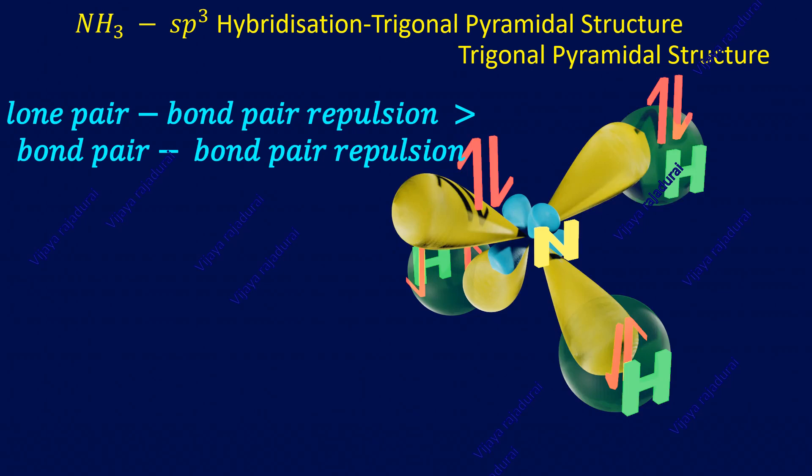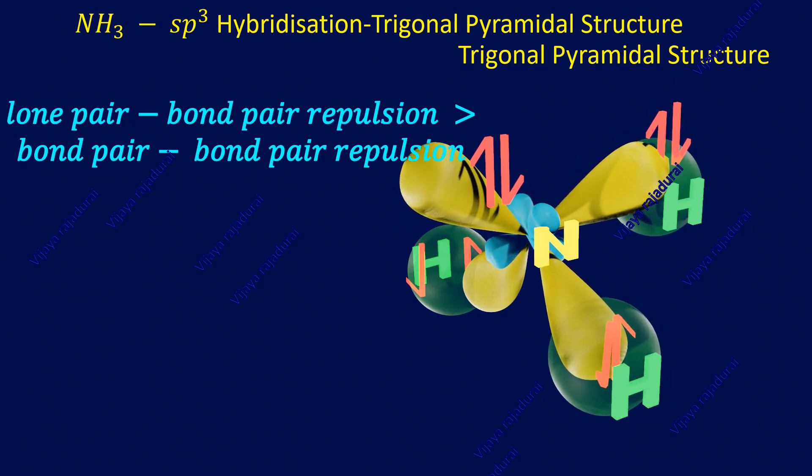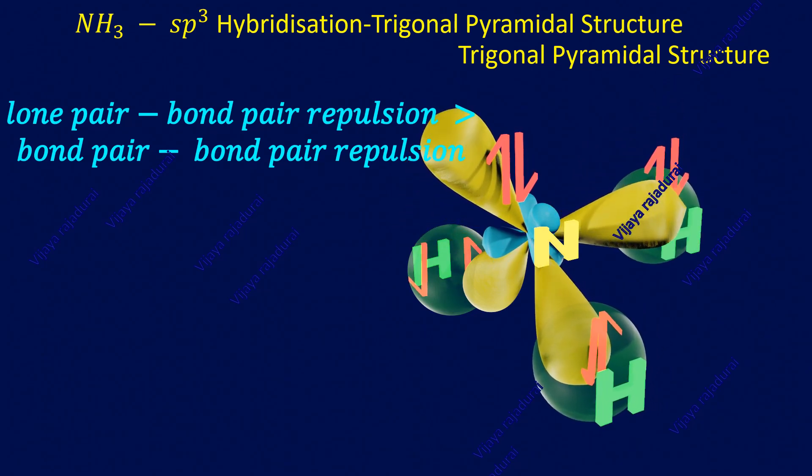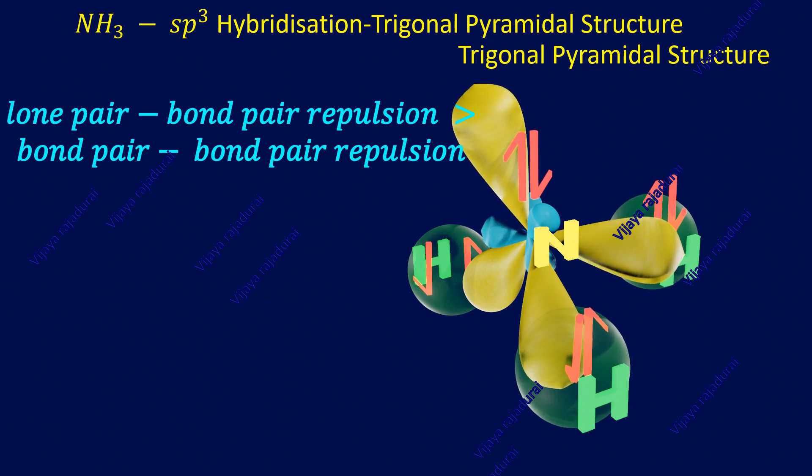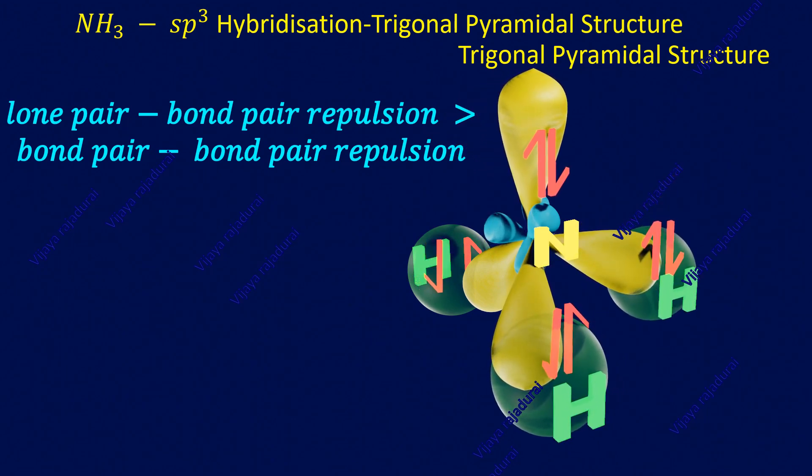So, to avoid the repulsion, the lobes of the sp³ hybridized orbitals are adjusted to get stabilized structure called trigonal pyramidal structure. So, the structure of ammonia is trigonal pyramidal structure.